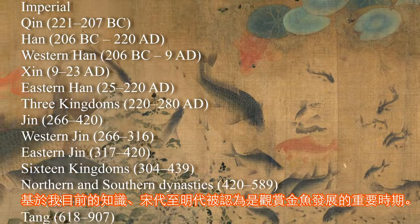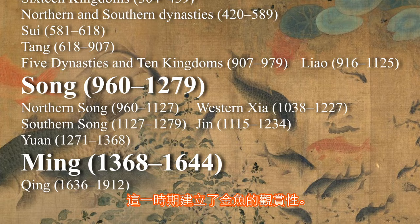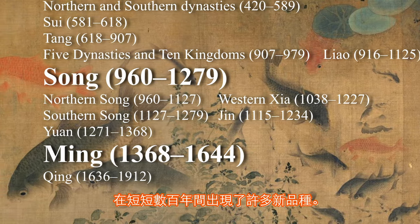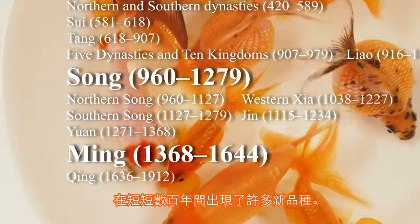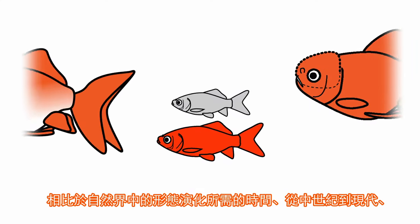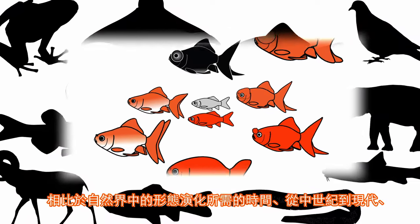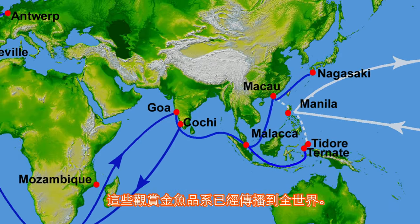Based on my current knowledge, the Song and Ming Dynasties are recognized as important periods for the establishment of ornamental goldfish. New varieties emerged over a very short period of time — just several hundred years. In other words, it is possible that these morphological changes occurred extremely fast compared to the time it takes for morphological evolution to occur in nature. From the middle to modern ages, these ornamental strains of goldfish have been kept and spread worldwide.